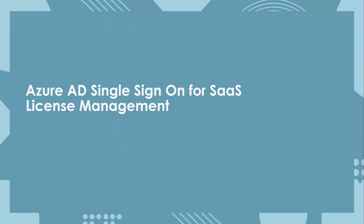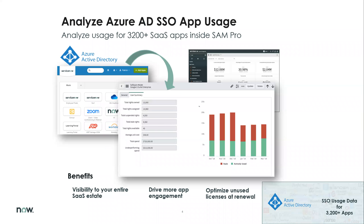Next is Azure AD Single Sign-On for SAS License Management. The challenge we have seen in many businesses is SAM managers wanting to analyze usage data for all their SSO-managed apps inside their SAM solution. To that end, we have added a single sign-on integration point to Azure AD to download applications, users, and user groups. We also analyze usage information for each application at the user level. Additionally, SAS providers have compatibility to sync with Azure AD and add or remove access within the corresponding SAS portal.